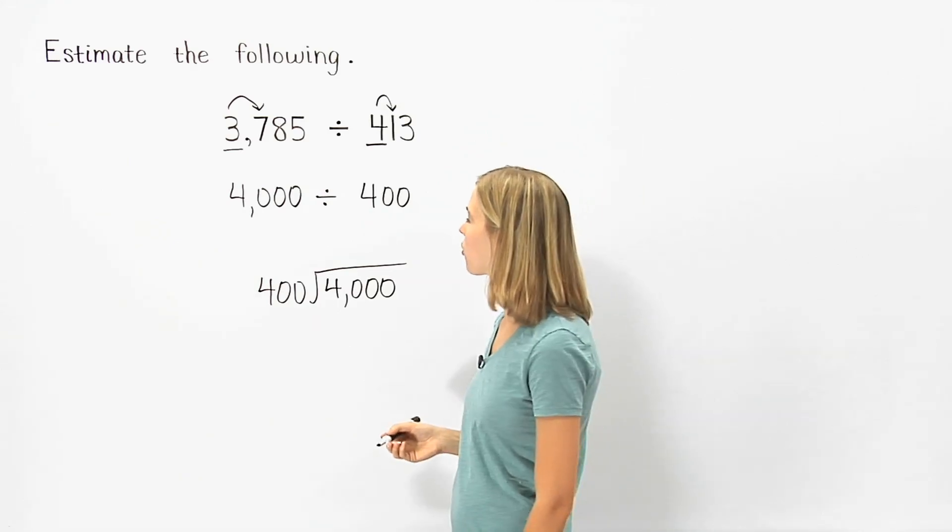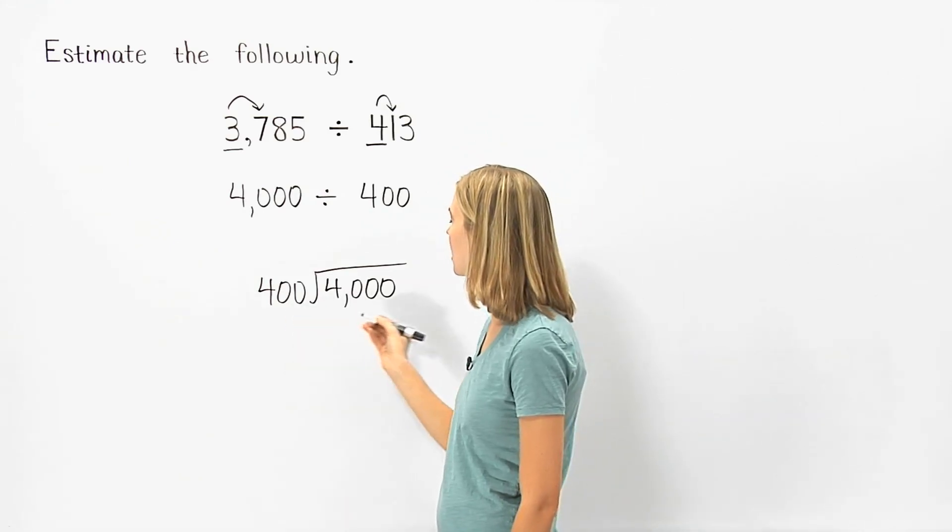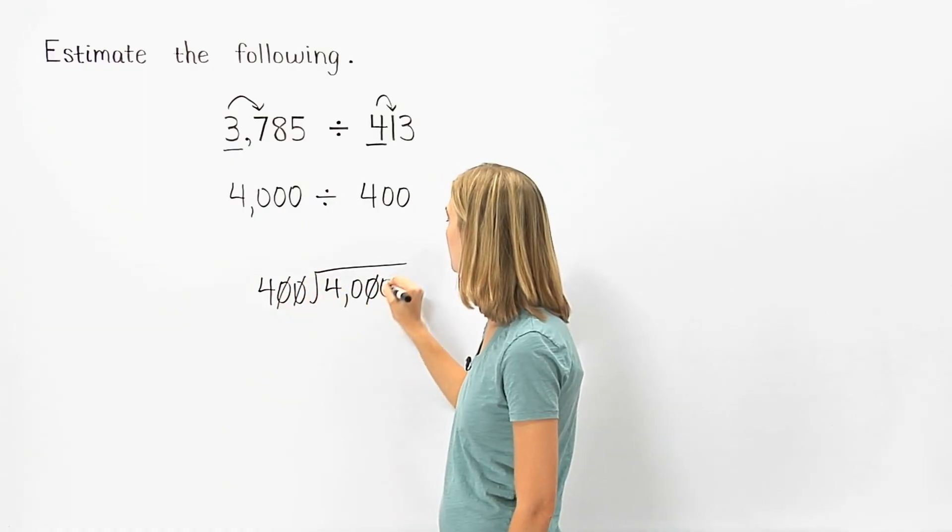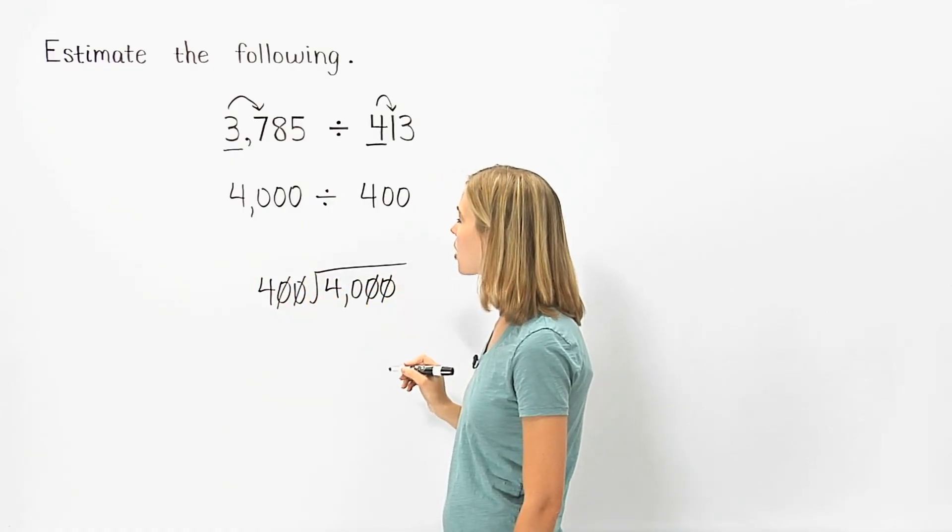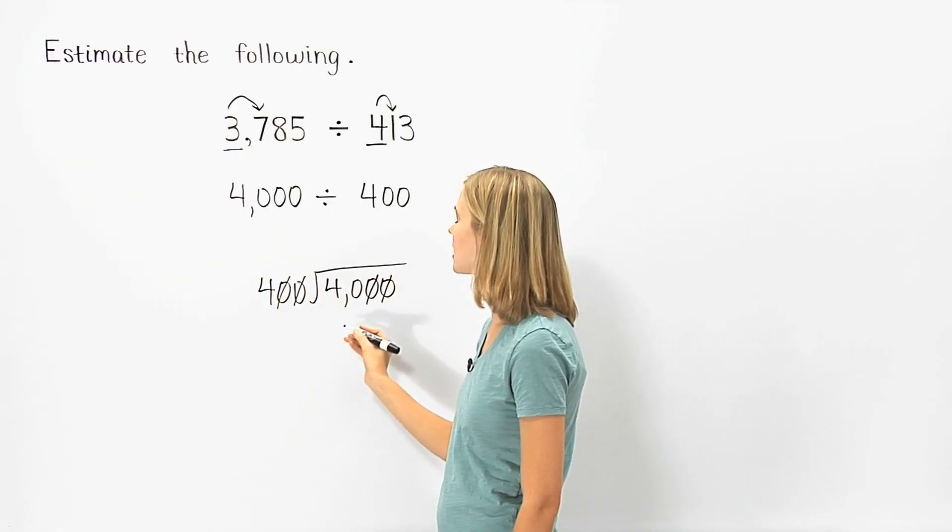Since 400 and 4,000 both end in two zeros, we can cancel the last two zeros in each number, so our problem now reads 4 divided into 40.